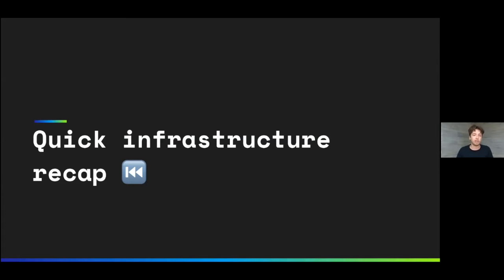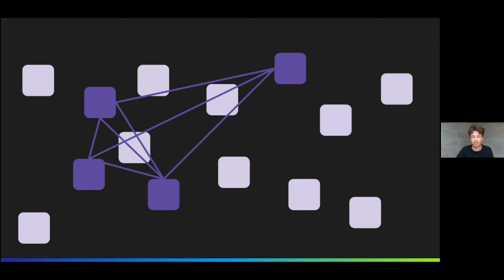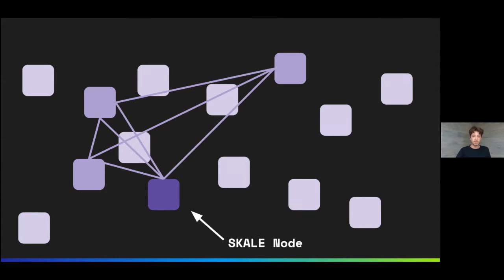First of all, let's do a super quick infrastructure recap. I'll tell you on a very high level how the SKALE network is structured. The SKALE network is a set of SKALE nodes run by validators. An S-chain is a subset of nodes that runs an Ethereum sidechain on them. Each SKALE S-chain consists of 16 SKALE nodes.